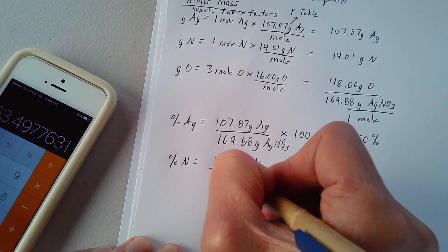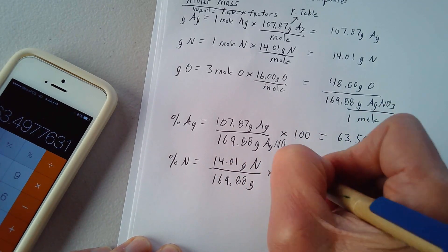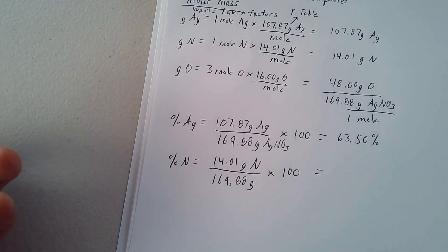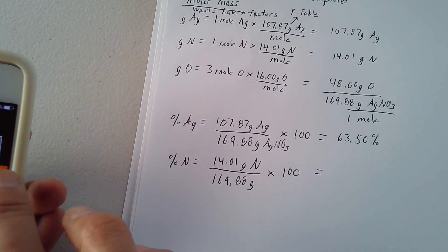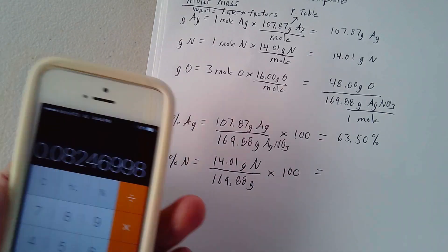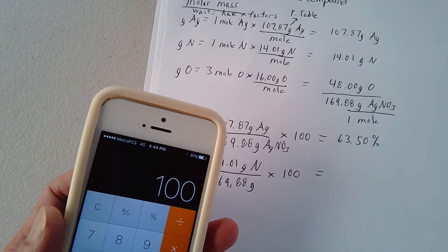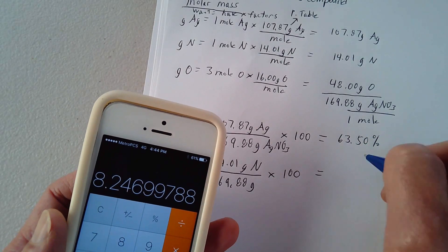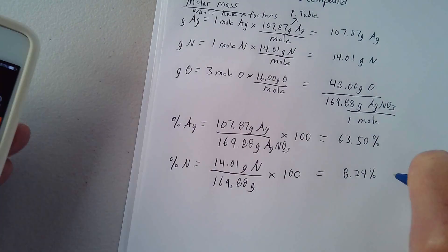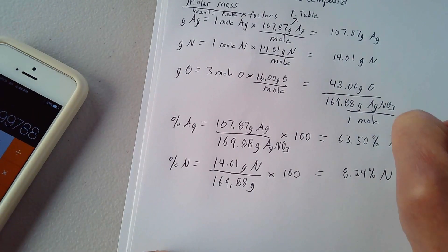We're looking at 169.88 grams times 100. We're looking at 14.01 divided by 169.88 times 100, 8.24%. And this would be nitrogen.